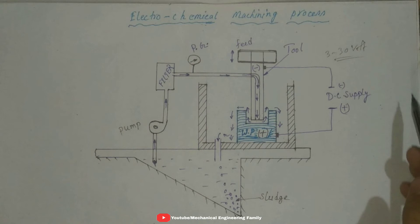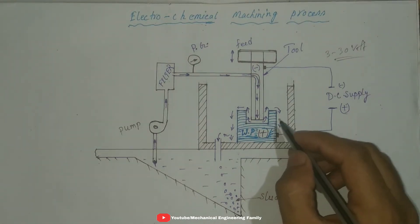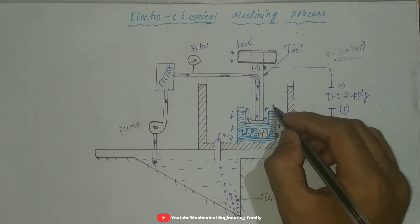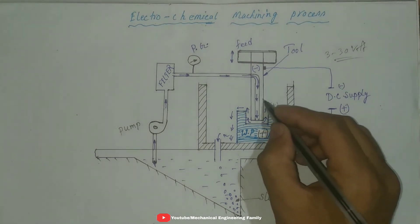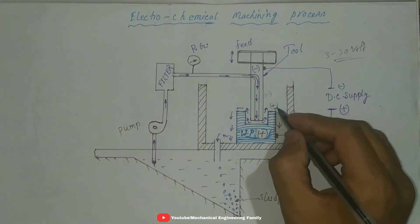And the negatively charged particle is attracted towards the positive. The workpiece, here positive charged particle and the tool, here negative charged particle.